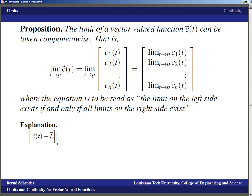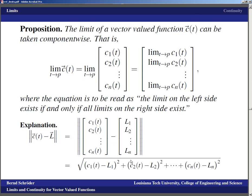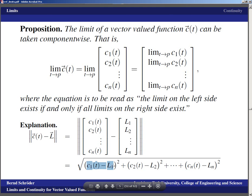The reason this works is that the limit is about closeness — the distance between C of T and L. Written component-wise, that's the norm of the difference between (C₁(T), …, Cₙ(T)) and (L₁, …, Lₙ), which is the square root of the sum of squares of the differences. If C of T goes to L, then for T close to the limit point, this norm must be small. That forces each individual difference to be small, so all components must converge. Conversely, if all component-wise differences become small, then the sum is also small, meaning the overall norm of the difference must be small. We can replace closeness of vectors with closeness of components.